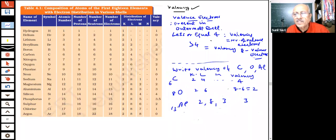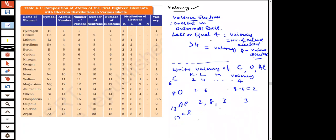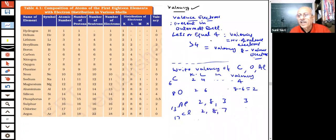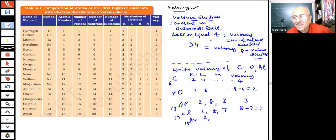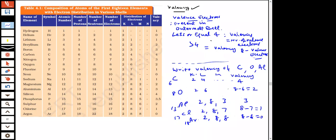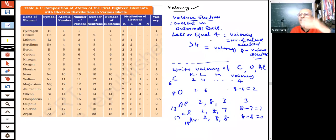For chlorine (atomic number 17, distribution 2,8,7): valency = 8 − 7 = 1. Chlorine forms one bond. Oxygen forms a double bond (valency 2). Carbon forms four bonds (as in CH₄). For argon (atomic number 18, distribution 2,8,8): valency = 8 − 8 = 0. So we can easily find atomic number, mass number, number of protons, neutrons, electrons, and valency of elements.